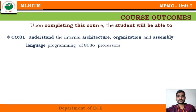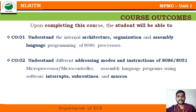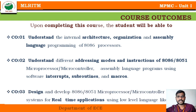The main course outcomes are: in the first unit (CO1) students will understand internal architecture, organization, and assembly level programming. CO2 covers understanding different addressing modes and instruction sets of the 8086 or 8051 microprocessor or microcontroller, and students can write different assembly language programs using the MASM tool.